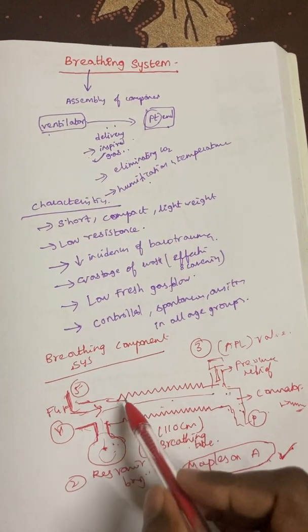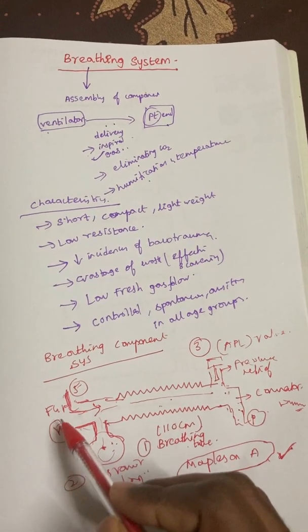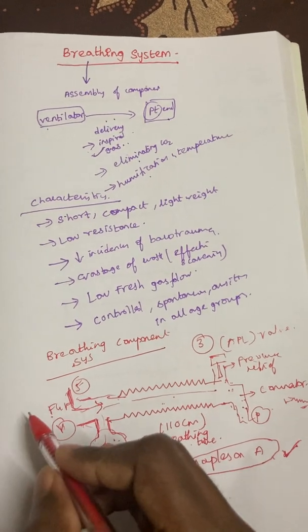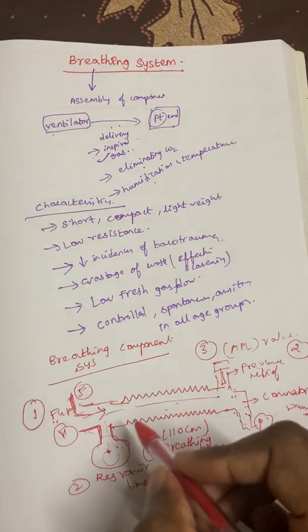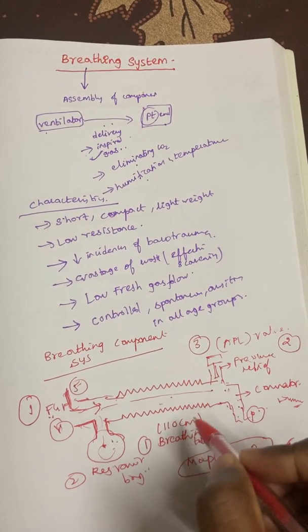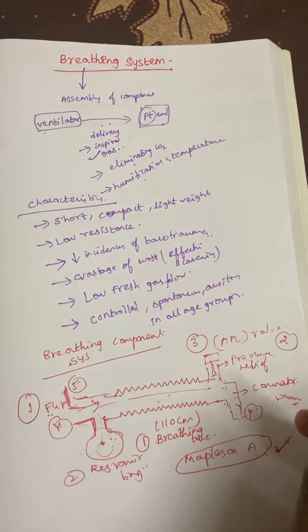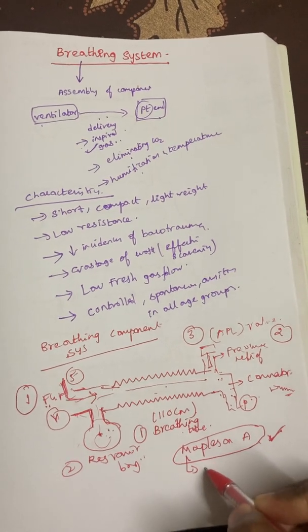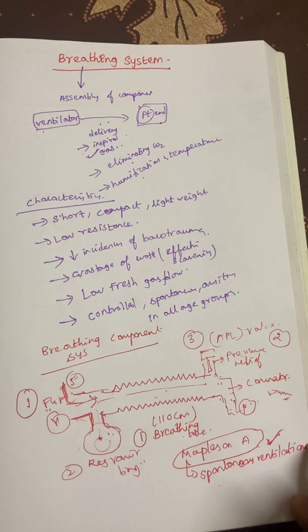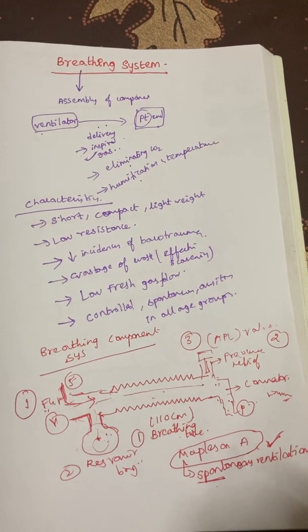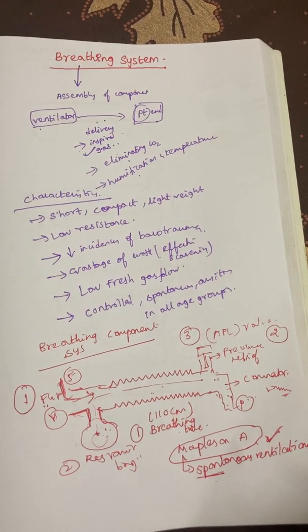In Mapleson A, the breathing tube remains the same, and the APL valve is present close to the patient end, whereas the fresh gas flow is present away from the patient end — that is, close to the machine end. The approximate length of the breathing circuit is 110 cm, and the reservoir bag is also present on the machine end. Mapleson A is most commonly used for spontaneous ventilation in adult patients. For controlled ventilation, Mapleson D (Bain's modification) and Mapleson E and F are used, especially in pediatric age groups.